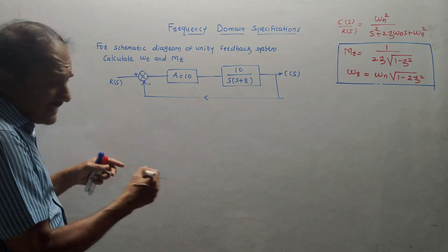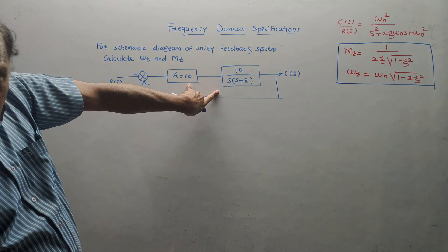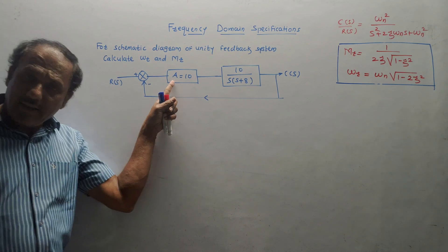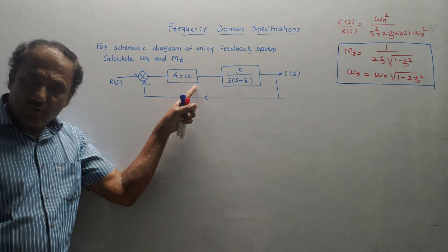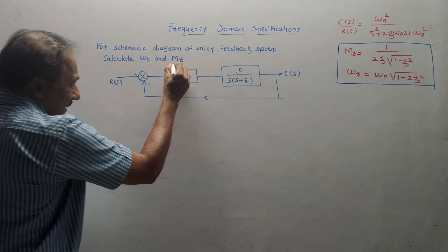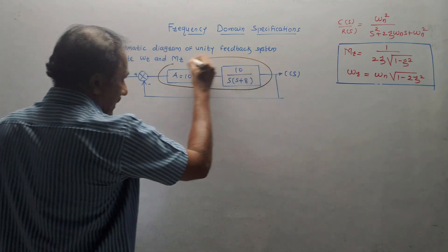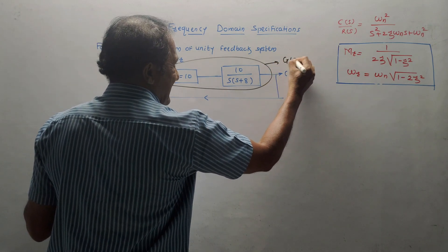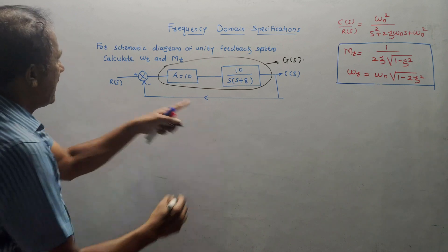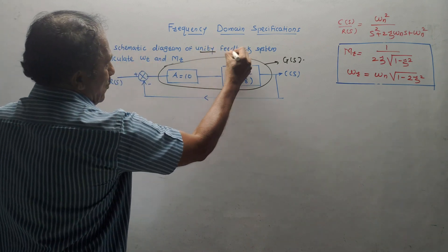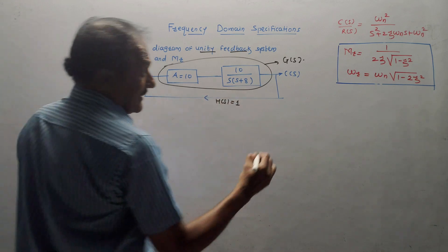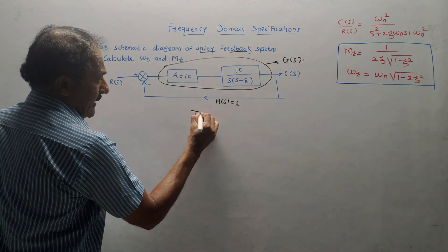Students should avoid the common mistake of combining incorrectly. Here, A = 10 is the gain. These two cascade blocks together represent G(s). There is no feedback block shown, and the question mentions unity feedback, so H(s) = 1. The first task is to find the transfer function.